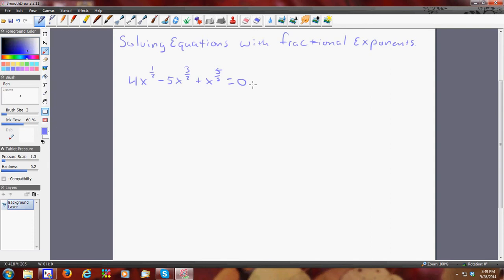Excuse me, please stop that. And I'm with my wonderful assistant Benjamin, who should be quiet during this video. So it says 4x to the 1 half minus 5x to the 3 halves plus x to the 5 halves equals 0.